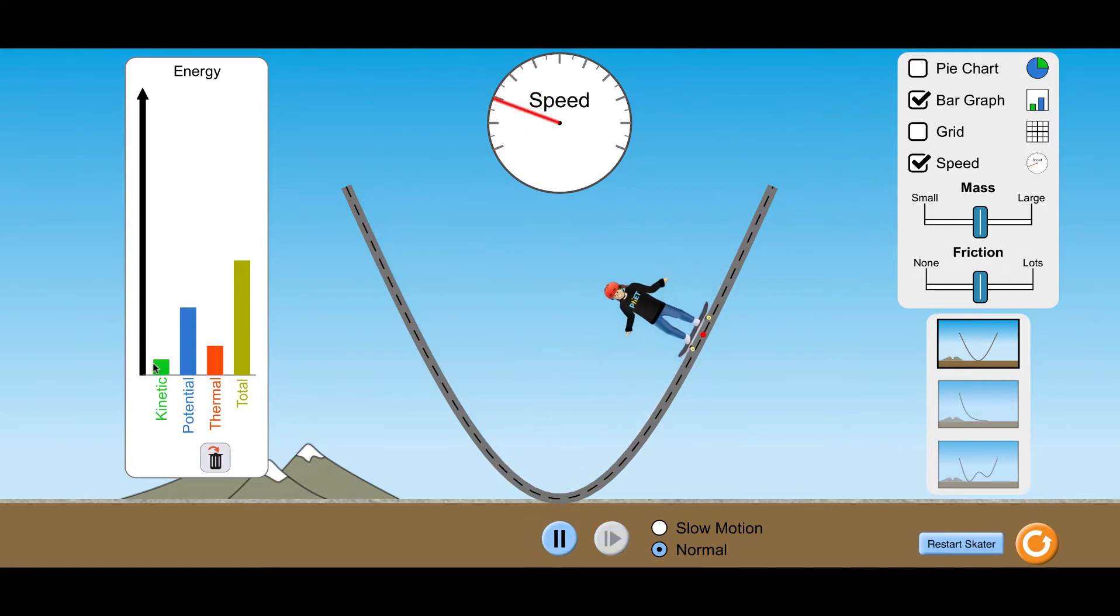So there she goes. She has speed. She has kinetic energy. But look at this. There's also thermal energy that's kicking in here, that red bar. And as that red bar gets bigger, both of these are getting smaller.